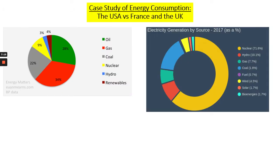Moving on to EQ2 on carbon, we're looking at the main case studies for energy. The specification asks you to look at the USA and France, but I also include the UK as a good comparison for 12-mark questions. The USA has a rather diverse energy mix but relies heavily on non-renewables — oil, gas, and coal — which make up roughly 80% of the USA's energy mix.